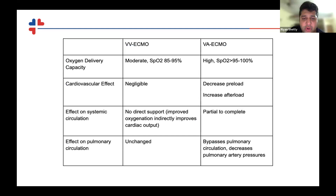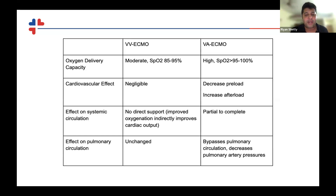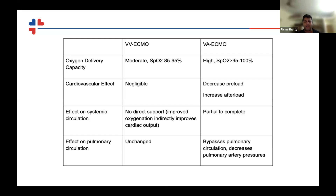The basic difference between veno-venous and veno-arterial: veno-venous can give a moderate amount of oxygen delivery, and its cardiovascular effect on preload and afterload is negligible. It has no direct support of the systemic circulation, but in respiratory failure it improves oxygenation, brings down pulmonary vascular resistance, and improves RV cardiac output. In veno-arterial ECMO, there is partial to complete support of the systemic circulation, and it bypasses the pulmonary circulation, decreasing pulmonary arterial pressures.